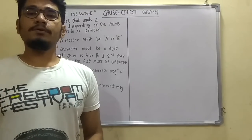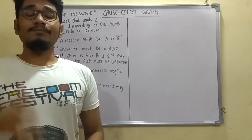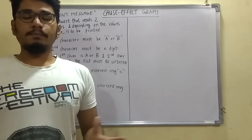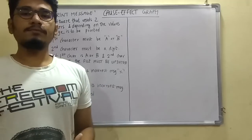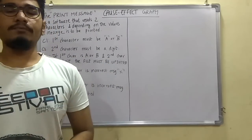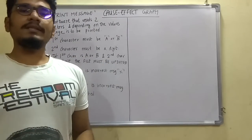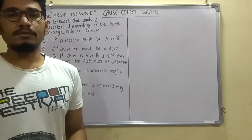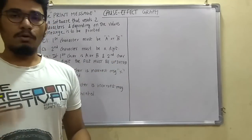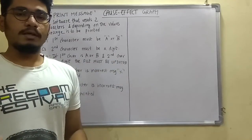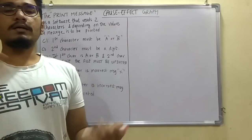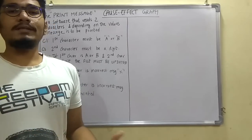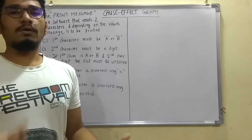In my previous video, I discussed decision table testing — that's a bit complicated. A smaller version of that is the cause-effect graph. In decision table testing we had conditions and actions, whereas here we have causes and effects, and we don't have to determine or write any test cases. Instead, we draw a graph called the cause-effect graph.